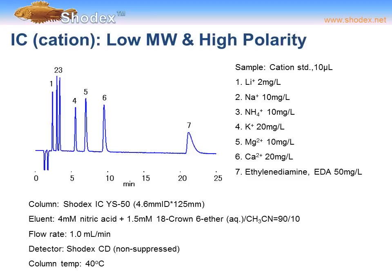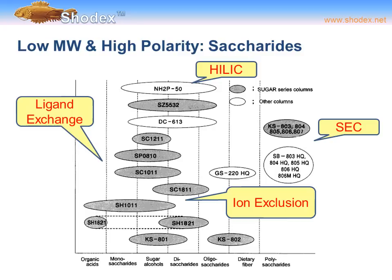Ion chromatography can also be performed in cationic mode. In this example, cations such as lithium, sodium, and magnesium are separated using a YS-50 column. The eluent was 4 mM nitric acid and 1.5 mM 18-crown-6 ether in a 90:10 aqueous/acetonitrile solution. Flow rate was 1 mL/min, and a conductivity detector was used.